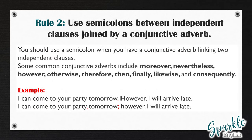Now let's look at rule two. We use semicolons between independent clauses joined by a conjunctive adverb. Maybe you're wondering what is a conjunctive adverb? Don't worry, I'm going to explain that now. You should use a semicolon when you have a conjunctive adverb linking two independent clauses. Some common conjunctive adverbs include: moreover, nevertheless, however, otherwise, therefore, then, finally, likewise, and consequently.